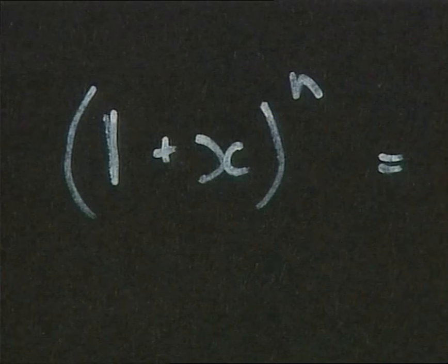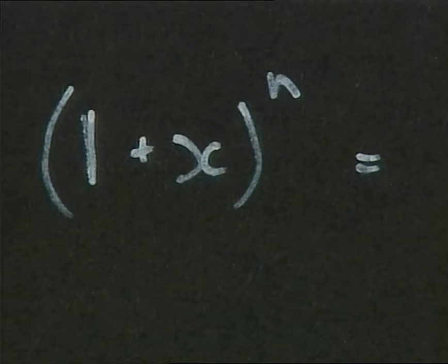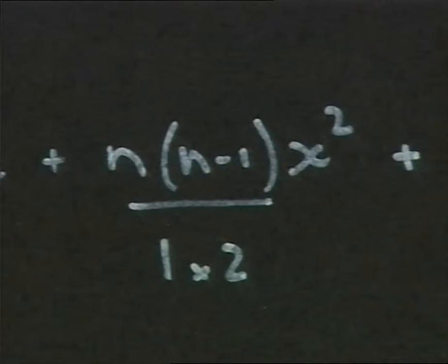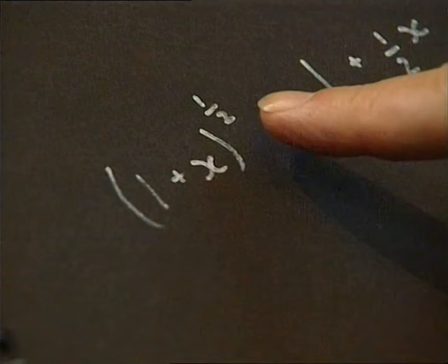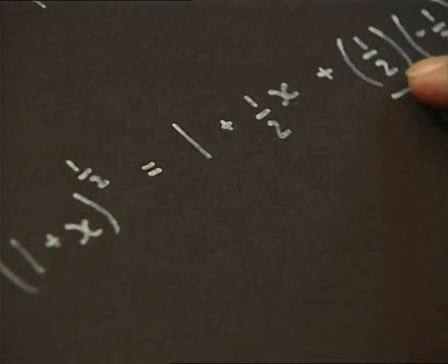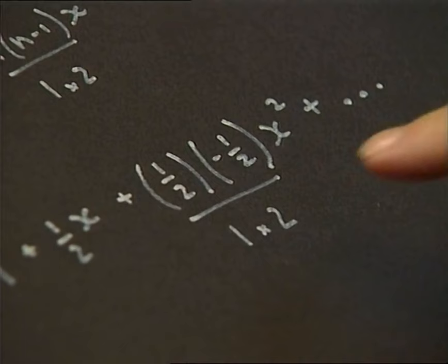The form of the binomial theorem had been known for a long time for integer values of n. You get an expression like this, finite number of terms, the value of n goes down by 1 each time, and the number of terms in the denominator goes up by 1 each time. What Newton discovered was a different expression for arbitrary values of exponent, for example, a half here. You still find that the exponent goes down by 1 each time, that the number of factorial terms increase by 1 each time, but now the whole expression is infinite. It never stops.